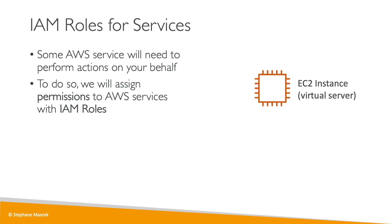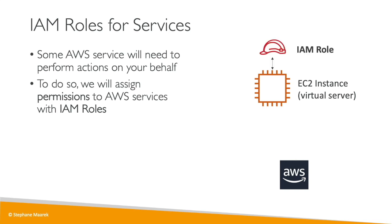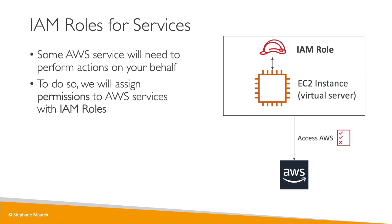For example, we are going to create throughout this course an EC2 instance — an EC2 instance is just like a virtual server. This EC2 instance may want to perform some actions on AWS, and to do so we need to give it permissions. So we're going to create an IAM role, and together they're going to make one entity. Once the EC2 instance is trying to access some information from AWS, it will use the IAM role, and if the permission assigned to the IAM role is correct, then we're going to get access to the call we're trying to make.